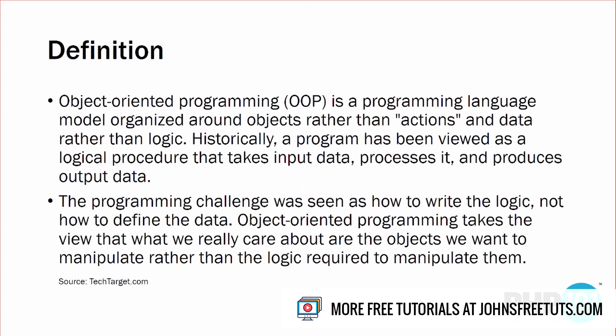Let's dive into this. So let's talk about the definition. Object-oriented programming is a programming language model. You could also use the word style, approach, or paradigm. The thing to understand about object-oriented programming is it's not like some different set of technology or a different language. It's just a different approach or style or model of the way you go about programming. And it's organized around objects rather than actions, and around data rather than logic.